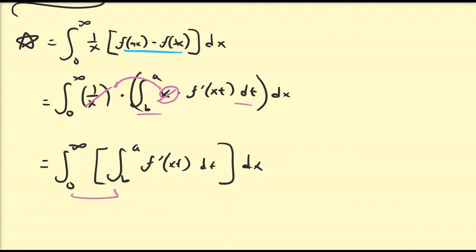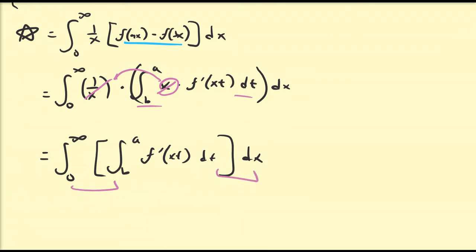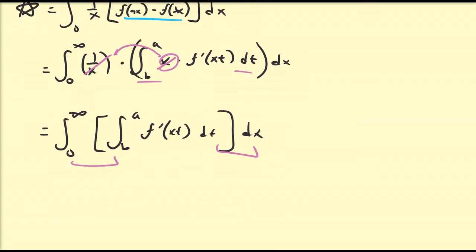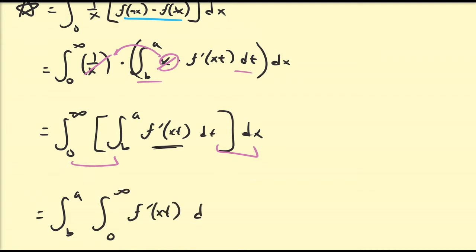So this is just equal to the integral from 0 to infinity of the integral from b to a of f'(xt) dt dx. I'm going to interchange these integrals — we can learn later in multivariable calculus a more rigorous condition on this integrand for which you can do this. So this is going to be equal to the integral from b to a of the integral from 0 to infinity of f'(xt) dx dt.